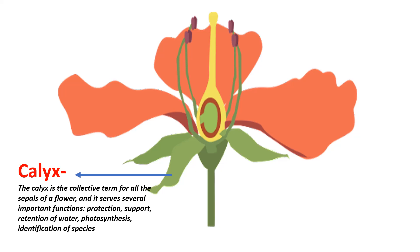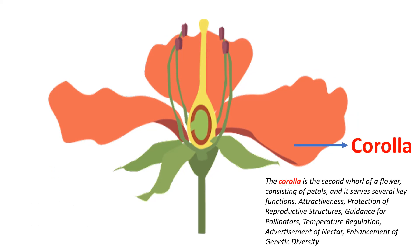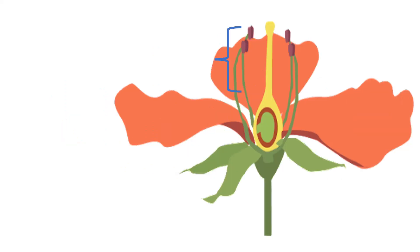Calyx: the outermost whorl of the flower consisting of sepals. Sepals are usually green and protect the flower bud before it opens. Corolla: the second whorl of the flower consisting of petals. Petals are often brightly colored and attract pollinators such as insects or birds.